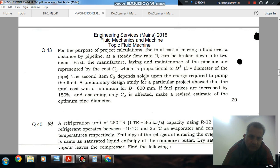Second item C2 depends solely upon the energy required to pump the fluid. A preliminary design study for a particular project showed that the total cost was minimum for D equal to 600 mm. If fuel prices are increased by 150% and assuming only C2 is affected, make a revised estimate of the optimum diameter.